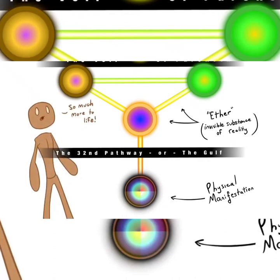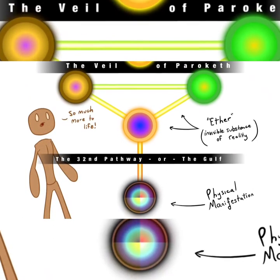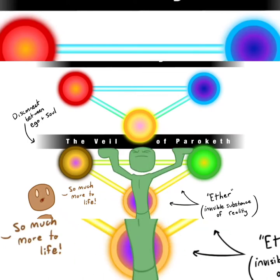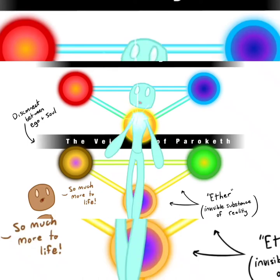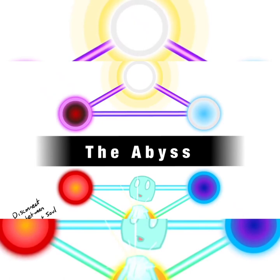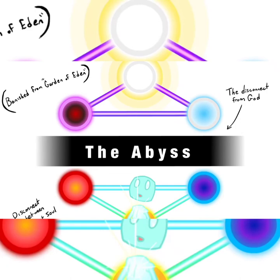The second barrier is called the Veil of Paroketh, located between the bottom two triangles, and represents the disconnect between our soul and our egos. This barrier marks the highest point to which our normal human consciousness can rise without transcendence. The third barrier is called the Abyss, which is between the upper two triangles. This represents the ultimate disconnect from spirit that we all experience and why we believe we are separate from everything. This abyss was created in the fall of consciousness.